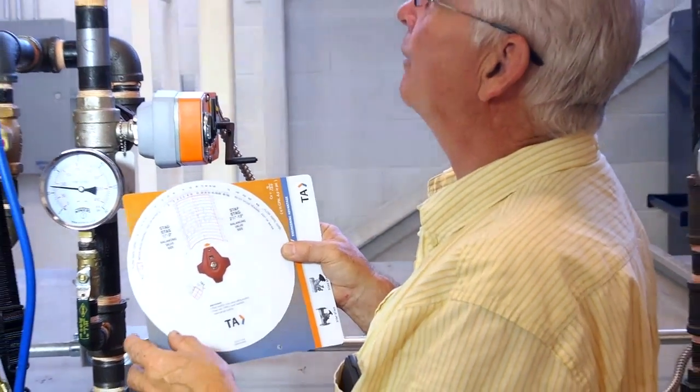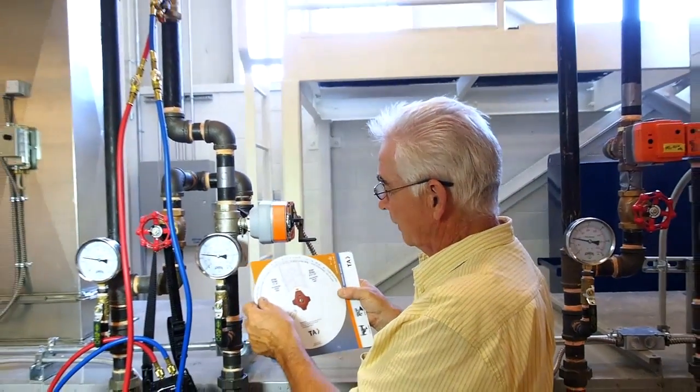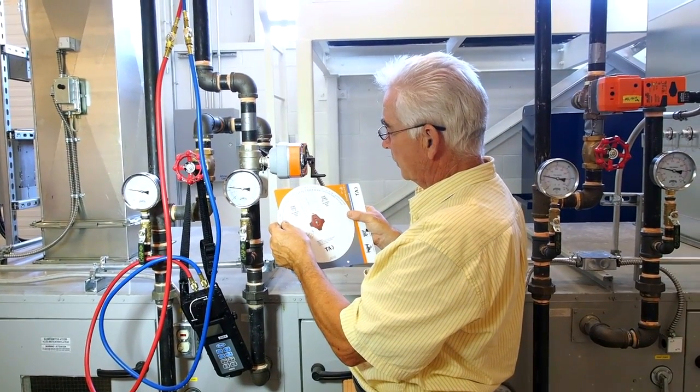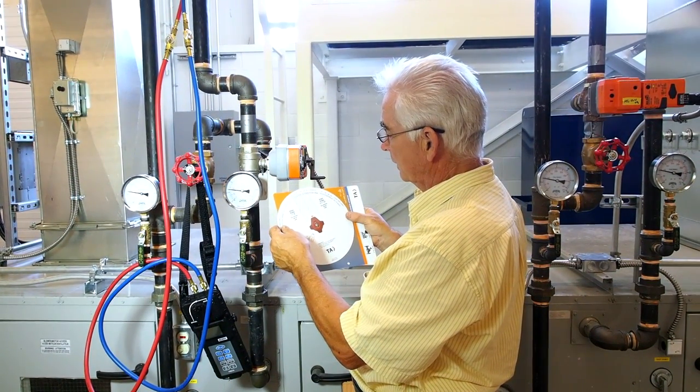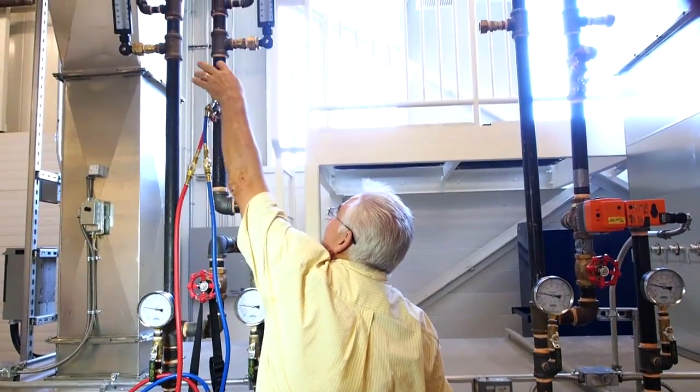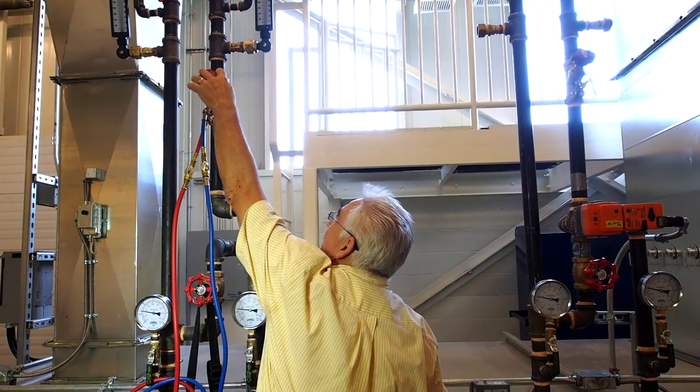But if we didn't want forty-eight gallons and say we only wanted forty gallons, then we turn the wheel. So maybe three point three, so we set this handle down from four down to three point three.